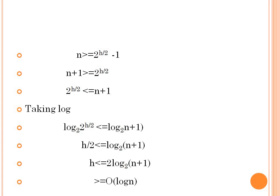So n is greater than or equal to 2^(h/2) minus 1. We take n+1 to the other side and apply the log. Taking log base 2 we get log₂(n+1) ≥ h/2, so h ≤ 2 log₂(n+1). The time complexity of a red-black tree is O(log n).